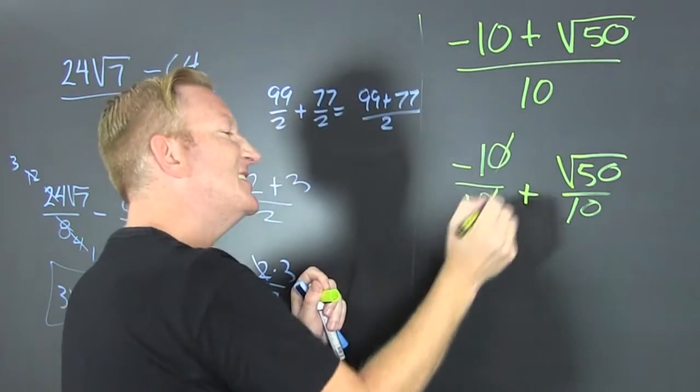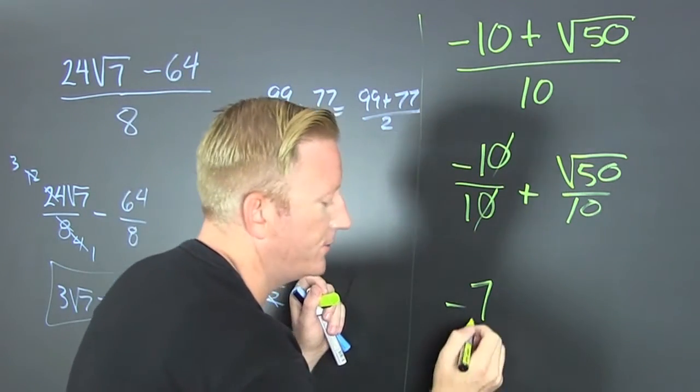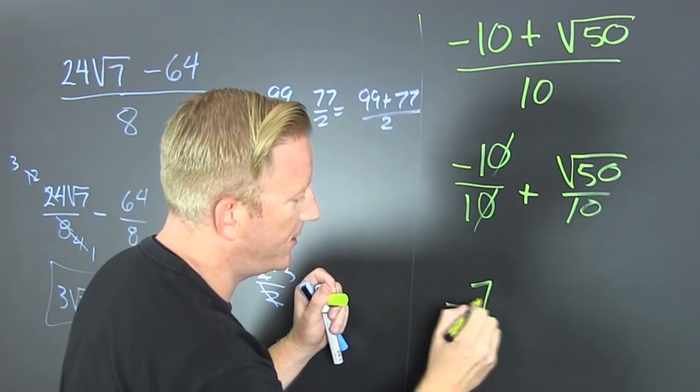I could say that's a minus 10 divided by 10. Then that's plus the root of 50 over 10. I'm not done. Oh, you are the 1. That's not a 1. That's a fancy 1.